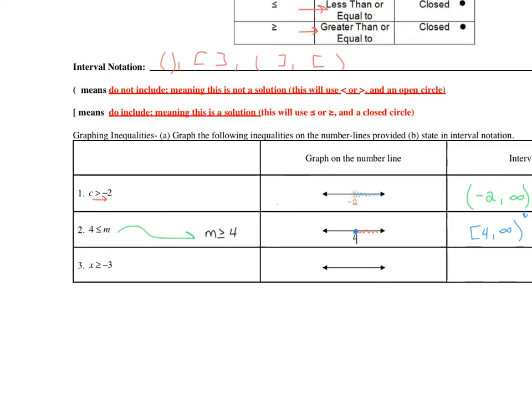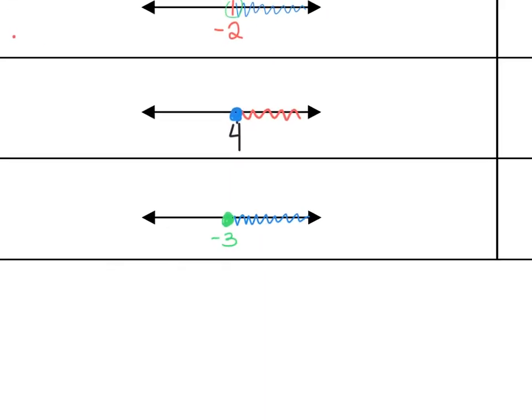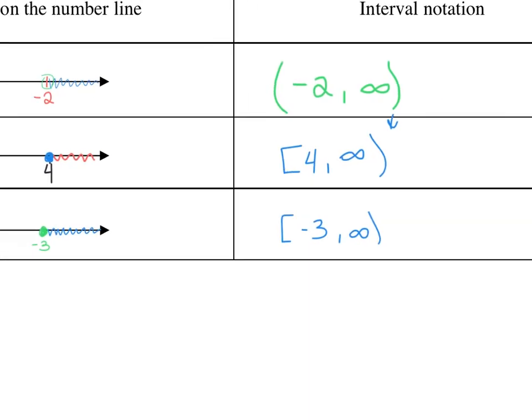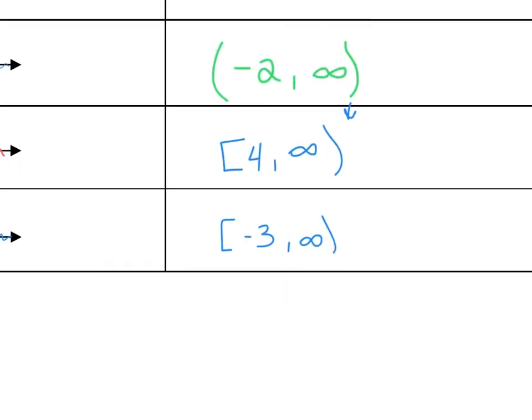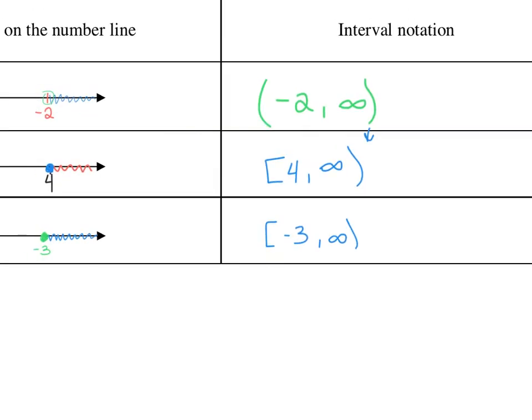Try to do the next one by yourself. For x is greater than or equal to negative 3, you should have plotted negative 3 on your number line and shaded to the right, because you want all the values of x that are larger than negative 3 and equal to it. We do a closed circle because it's greater than or equal to. And since we're always going on forever to the right, we do our infinity. So it's going to be bracket negative 3 to infinity.